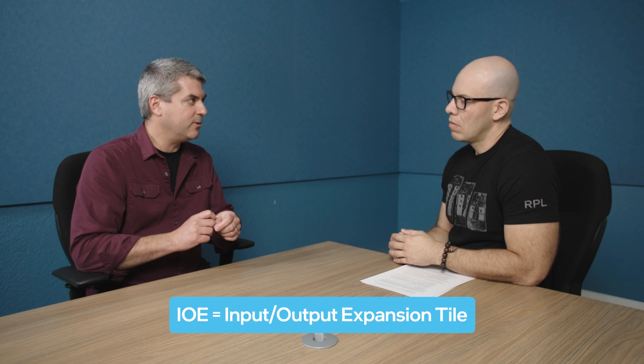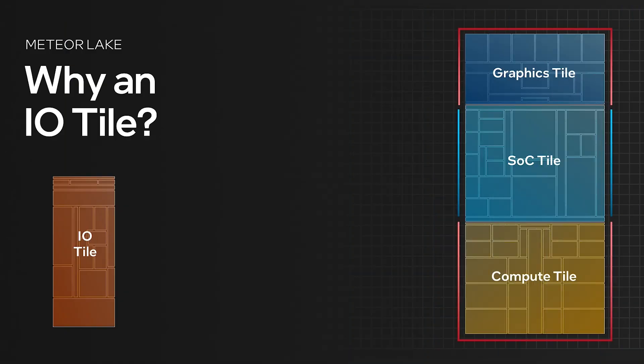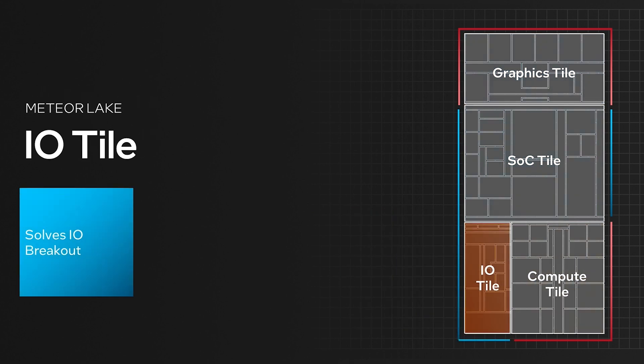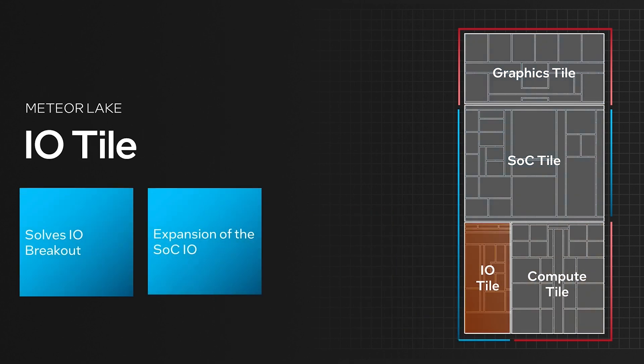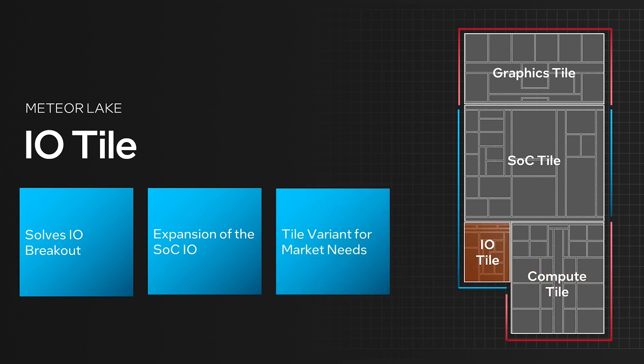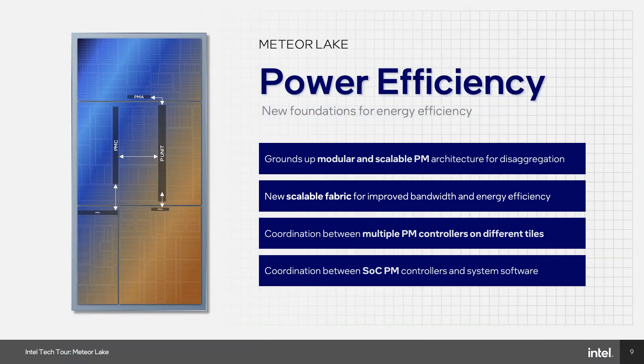What you'd really want for the SOC die is an L-shaped tile, but you don't want to manufacture an L-shaped tile — you want rectangles. The biggest single reason for the IOE was to solve an IO breakout problem: two rectangles abutted give you the L-shape you want. It also came in handy for disaggregation's mix-and-match capability. Across the mobile line there are different IO requirements, so we built two versions of the IOE with different port counts. Platforms not using certain IOs don't need to pay silicon for them, so we kept a common SOC die but built two different-sized IOEs.